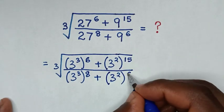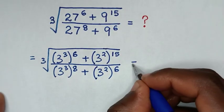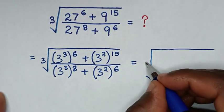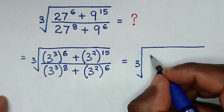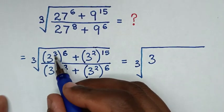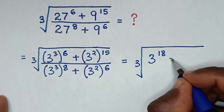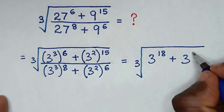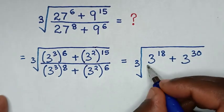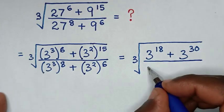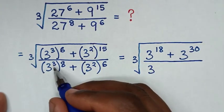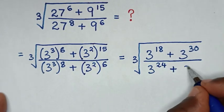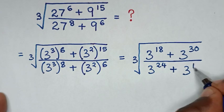Then bracket power of 6. It will be equal to cube root of 3 power of 3 times power of 6 is power of 18, then plus 3 power of 2 times 15 is power of 30, then over 3 power of 3 times 8 is power of 24, then plus 3 power of 2 times 6 is power of 12.